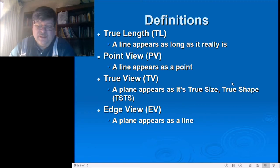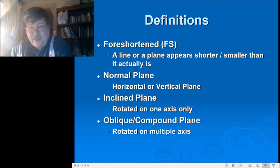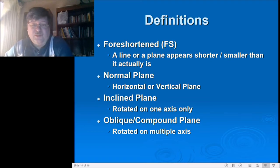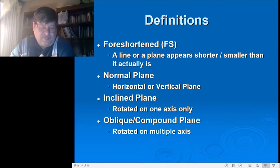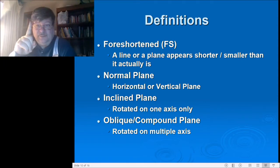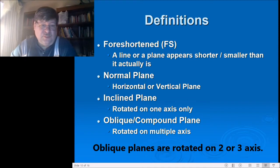Foreshortened (FS) — a line or plane appears shorter or smaller than it actually is when tipped on one or two axes. A normal plane is simply horizontal, vertical, or perpendicular to one of those. An inclined plane is rotated on one axis. An oblique plane — sometimes the book calls it a compound plane — is rotated on two or more axes. When the book talks about a line inclined by two or three axes it's called oblique; for a plane inclined by two or more axes it's called oblique or compound.